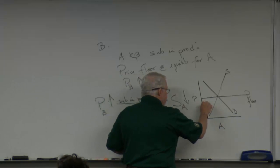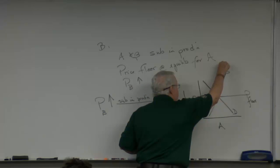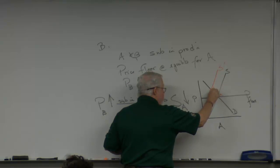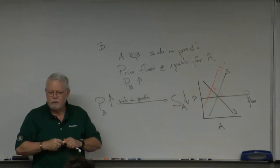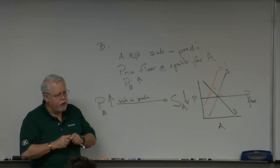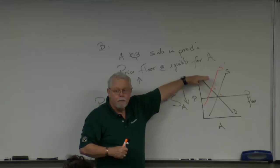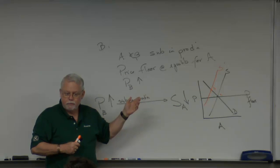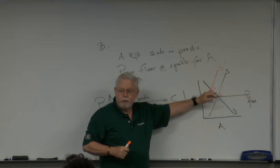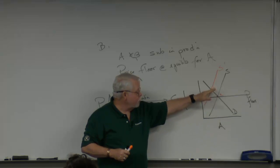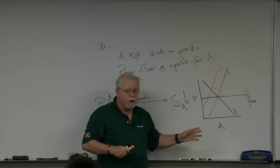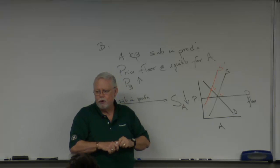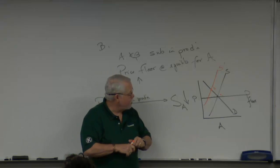If the supply curve shifts to the left — S prime, new supply curve — equilibrium is going up from point A up to point B. Is that permitted given a price floor? The answer is yes. Since the price goes above the price floor, the price floor is irrelevant — it's just thrown out there to try to trip you up. The price will increase, the quantity will decrease, or you will achieve a new equilibrium. Supply of A will decrease, raising the price.